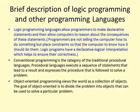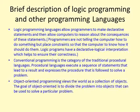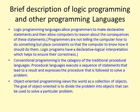Next, we have conventional programming, which is the category of traditional procedural languages. Procedural languages execute a sequence of statements that lead to a result and express the procedure that is followed to solve a problem. Finally, we have object-oriented programming languages, which view the world as a collection of objects. The goal of object-oriented programming is to think about the problem by dividing it into a collection of objects. One of the main tenets of object-oriented programming languages is encapsulation — that everything an object needs should be inside of the object.